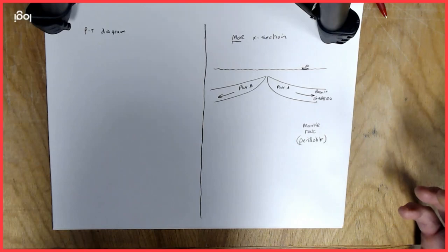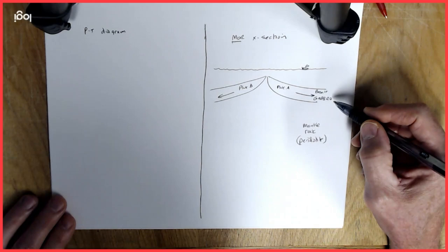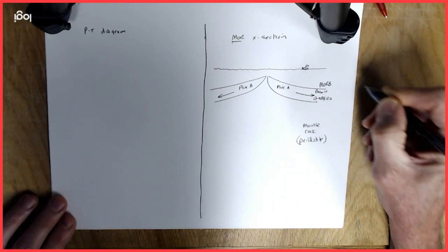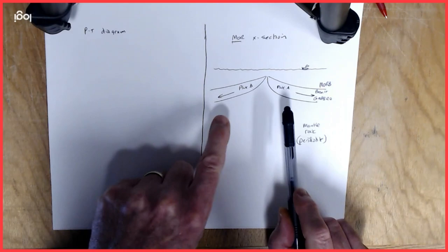In this environment we have volcanic rocks that form, it's basalt, it's mafic that forms at the surface. They're actually underlain by gabbro. We sometimes call that basalt MORB, or sometimes we just call it MOR, for mid-ocean ridge basalt.